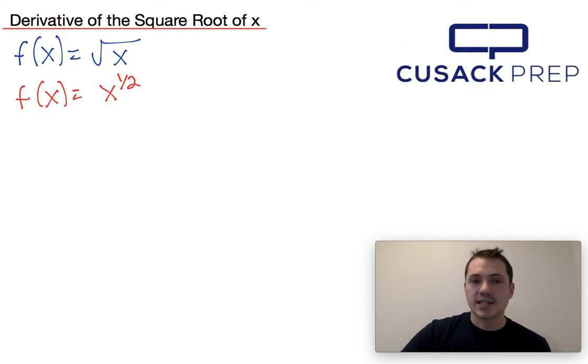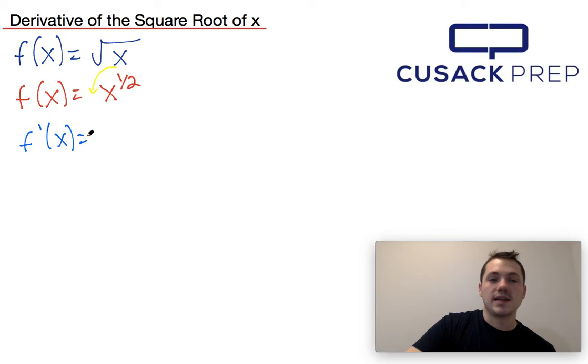And once you make that connection, we can use the exponent rule which requires you to bring this 1 half down to the front and then subtract 1 from it. We would find that f prime of x is equal to 1 half of x raised to 1 half minus 1, which is just negative 1 half.